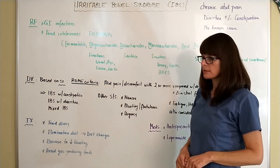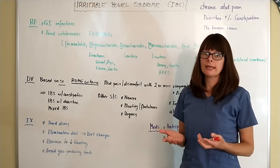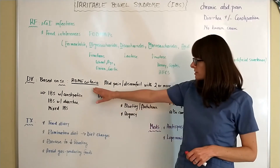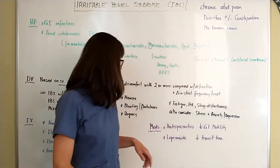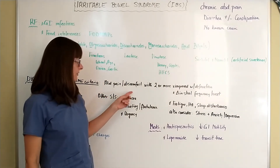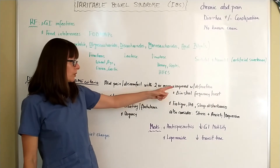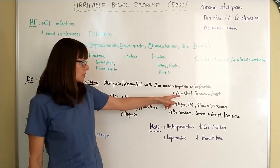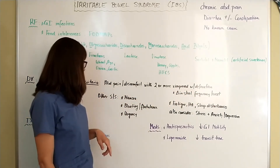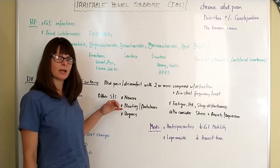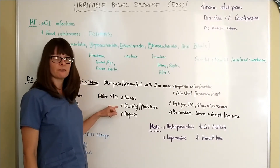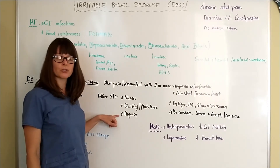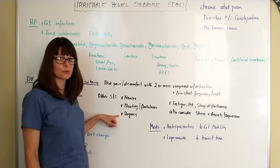For a diagnosis of irritable bowel syndrome, there are not really any diagnostic tests — the diagnosis is made based on patient symptoms. There is something called the Rome criteria, which requires abdominal pain and/or discomfort with two or more of the following: the abdominal pain improves with defecation, or there is a change in stool frequency or onset. Patients may also have nausea, bloating, flatulence, or urgency where they really have to hurry to use the restroom.